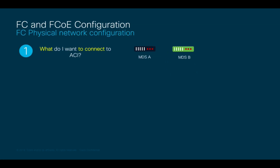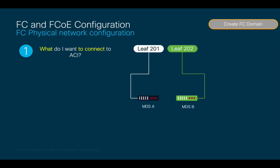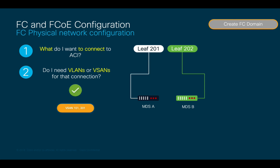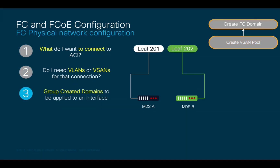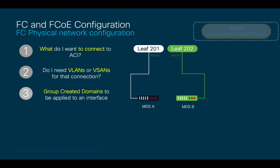Let's start configuring our scenario by focusing on the Fiber Channel side first, connecting our leaf nodes to the MDS switches. The first question is, what do I want to connect to ACI? I want to connect my MDS-A and MDS-B Fiber Channel switches, therefore I will create a Fiber Channel domain for both of them. The second question is, do I need VLANs or VSANs for such connections? I do — I will use VSAN 101 for my MDS-A connection and VSAN 201 for MDS-B, so I will create a VSAN pool including them. The third step would be to create an AEP and add our Fiber Channel domain from step 1, which already includes the VSAN pool.